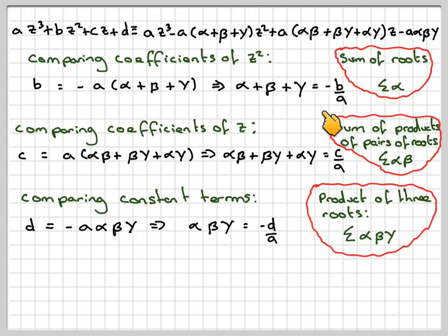So that's known as the product of three roots. So therefore, these three things are the properties for the sum and product of roots for a cubic equation.